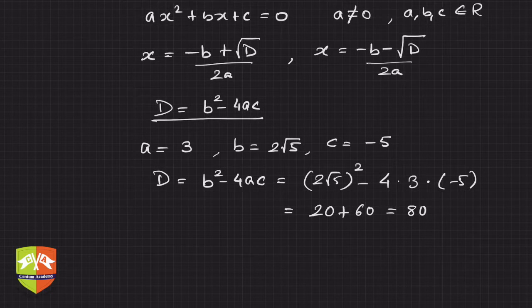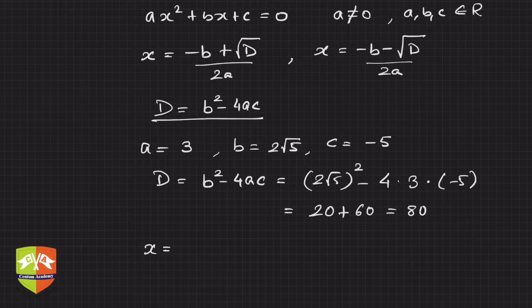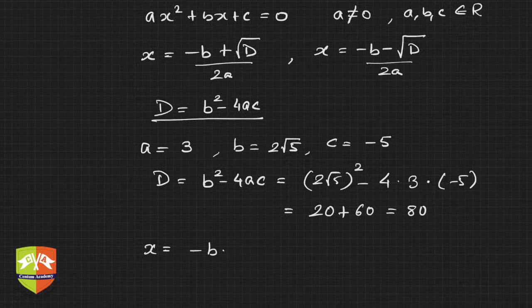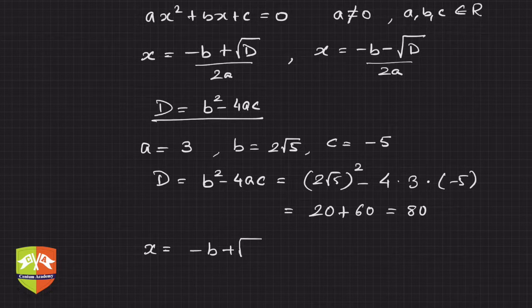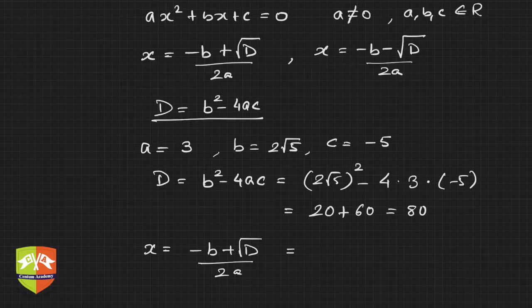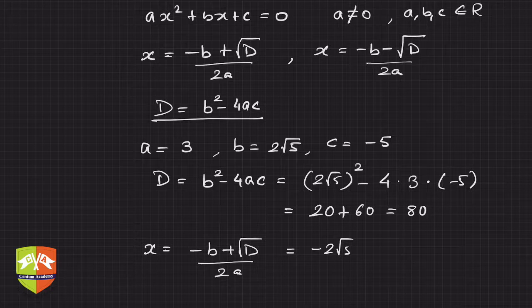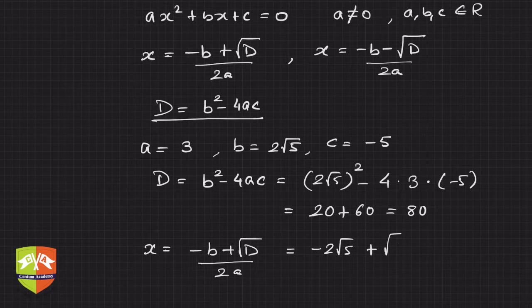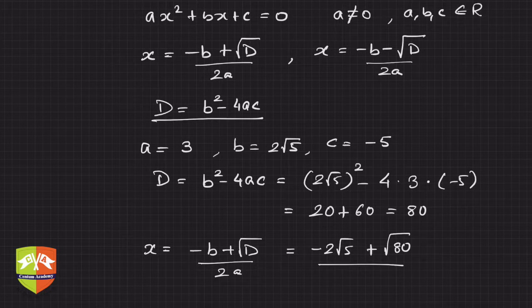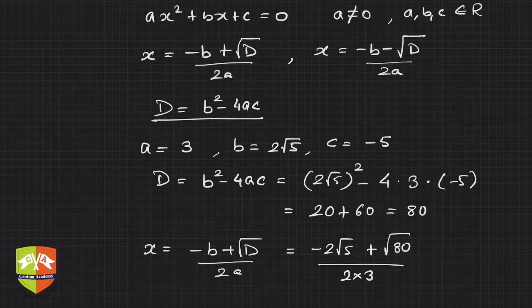Now let's find the solution. x = (-b + √D)/(2a), which is -2√5 + √80, divided by 2a, which is 2 × 3 = 6.